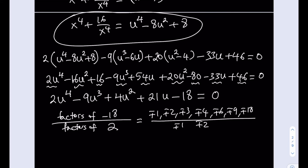One useful check: if you add up the coefficients of even-power terms — 2 plus 4 minus 18 is negative 12 — and the odd-power terms — 21 minus 9 gives 12 — the sum of all coefficients is 0. This means u equals 1 is a solution, because plugging in 1 gives 2 minus 9 plus 4 plus 21 minus 18 which is 0. So u equals 1 is confirmed as a solution.